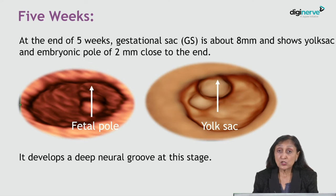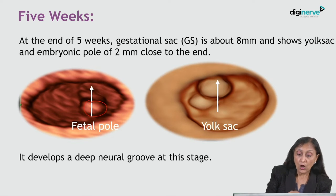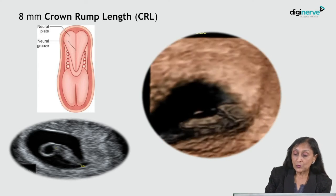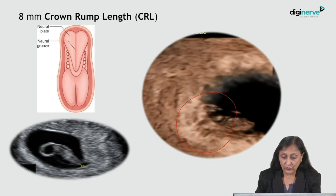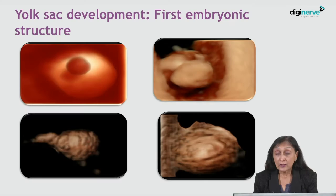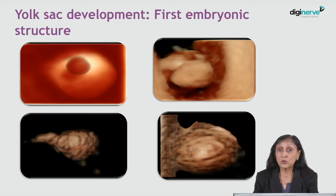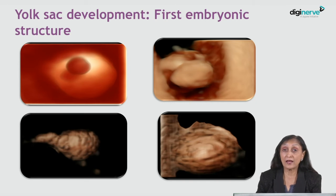At five weeks of pregnancy, you would see a gestational sac of about eight millimeters and you'll also see the yolk sac inside along with the fetal pole. The neural tube starts developing as early as that in the form of the neural groove first, beautifully seen on 3D imaging as an elevation on the back of the fetus. Yolk sac development occurs in the first trimester and starts even earlier than the development of the embryo — it is in fact the first embryonic structure that appears in the gestational sac.